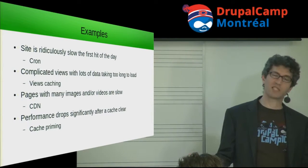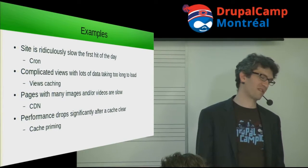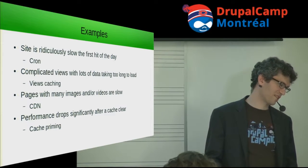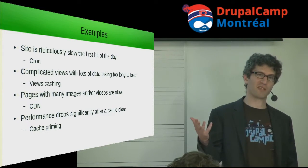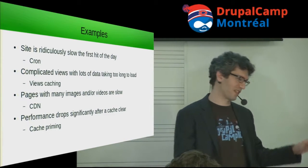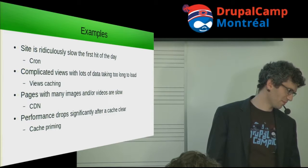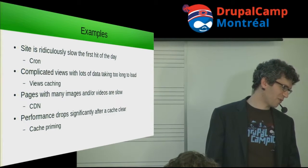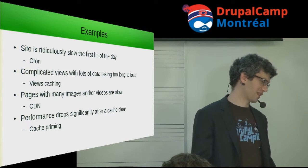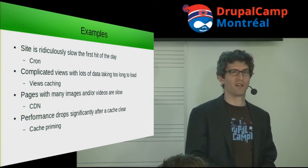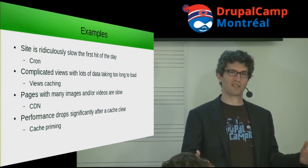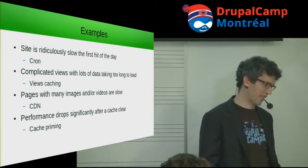If you've got a lot of images or videos, you probably don't want to host those locally. Get a CDN — a content delivery network. It's a service you pay for where you host your items there; they're geographically dispersed so whoever is closer will get that version of the assets. Also, if your performance drops after clearing caches, you might want to set up cache priming or warming, where after cache clears something goes in and repopulates your cache so users won't have to wait for it to rebuild.